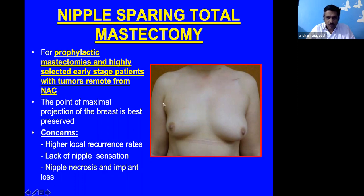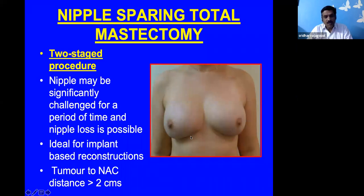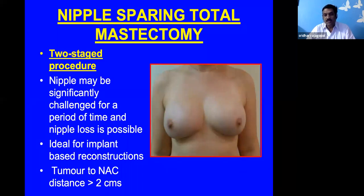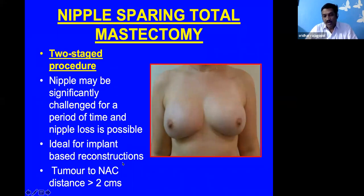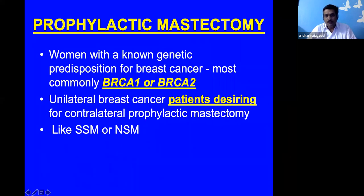In nipple-sparing mastectomy reconstruction with an implant, it is a two-stage procedure: first, resect the tumor and place an expander implant, as the nipple blood supply is significantly challenged. Wait one to two weeks for the nipple to settle, then plan reconstruction. Tumor-to-nipple-areola distance must be at least 3 cm minimum. This is ideal for implant-based reconstruction giving excellent symmetry. Prophylactic mastectomies are done in patients predisposed to malignancy or when a patient with unilateral cancer desires contralateral surgery — performed as either skin-sparing or nipple-sparing mastectomy.